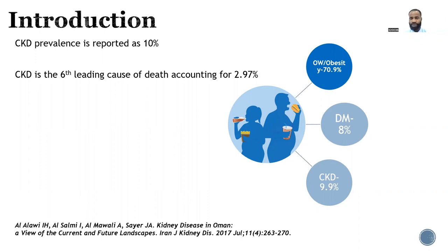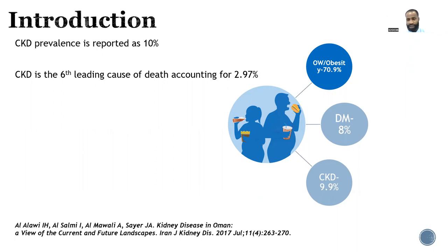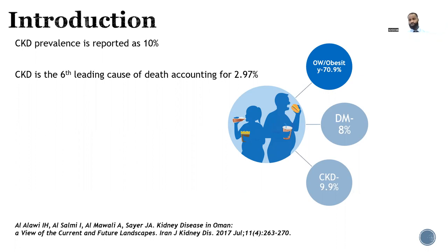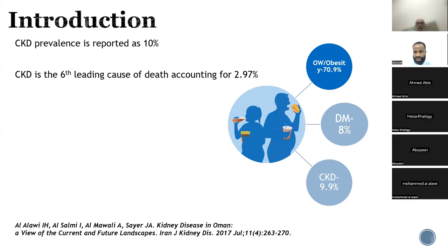What I found very intriguing and unsettling about these reports is that overweight and obesity prevalence was reported at 70.9% — that is a lot. I think that society will need to do a great deal in preventive nephrology, because with this prevalence of obesity and overweight, if something is not done urgently, the outlook is not good. Society needs to take that as a challenge.